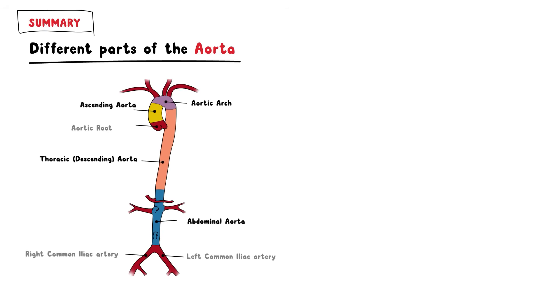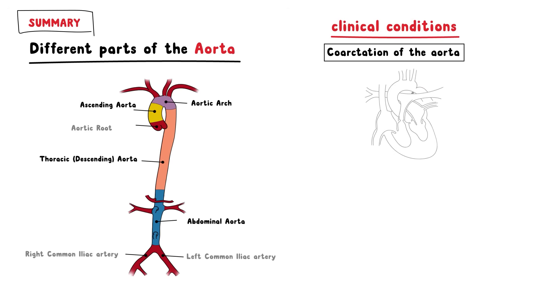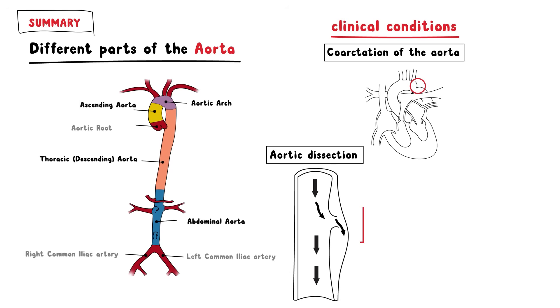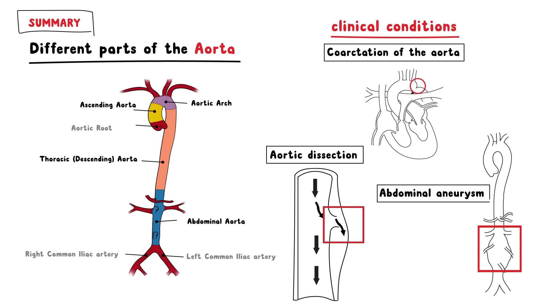In summary, this video covered the different parts of the aorta: the ascending aorta, the aortic arch, the thoracic or descending aorta, and the abdominal aorta, along with their branches. We also discussed three clinical conditions: aortic coarctation, which affects the aortic arch; aortic dissection, which mostly affects the ascending aorta; and aortic aneurysm, which most commonly affects the abdominal aorta. Thank you for watching.